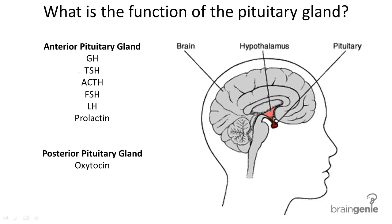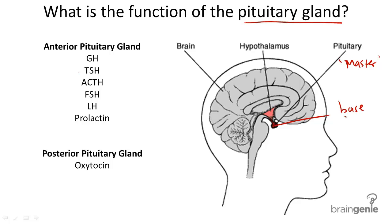What is the structure and function of the pituitary gland? Sometimes called the master gland, the pituitary gland is located at the base of the brain, and it controls many body functions as well as other endocrine glands.